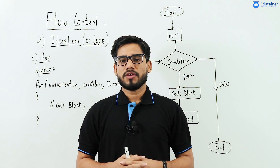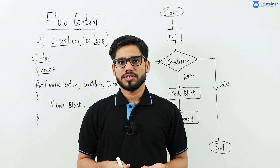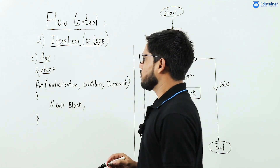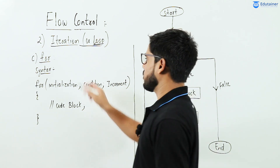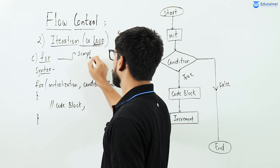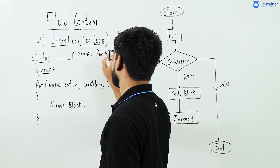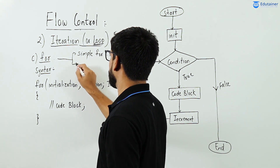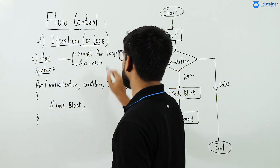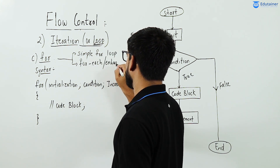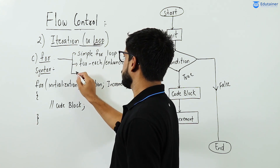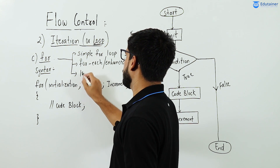Hello and welcome back everyone. Now let's see the last equation which is for loop. So for loop — the first is the simple for loop, second is the for each, and third is the labeled for loop.